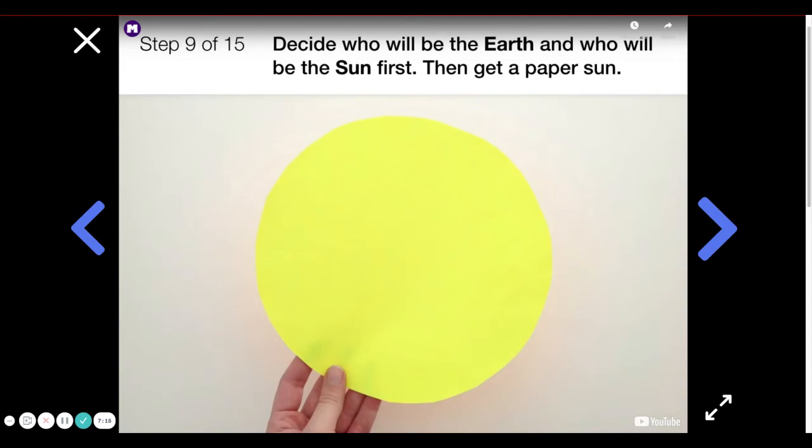Decide who will be the earth and who will be the sun first. Then get a paper sun from your teacher.